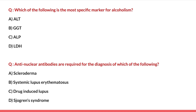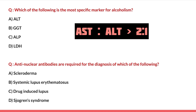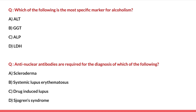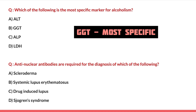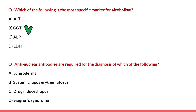Next question: which of the following is the most specific marker for alcoholism? Options are ALT, GGT, ALP, and LDH. For alcoholism, both ALT and GGT rise, but GGT is the most specific marker for alcoholism. So the answer is GGT.